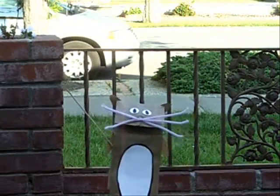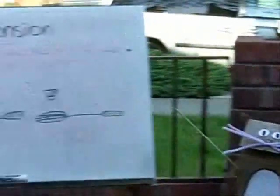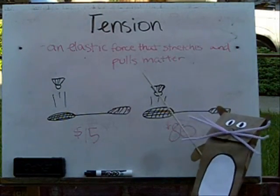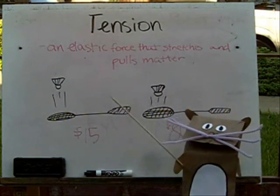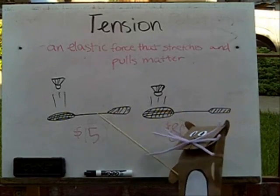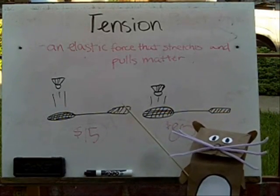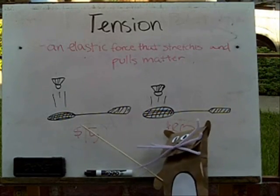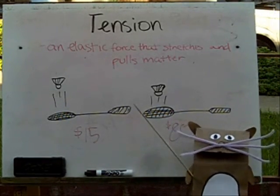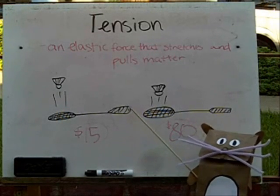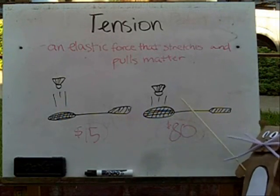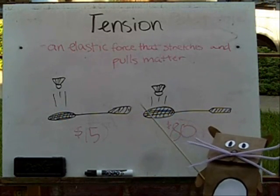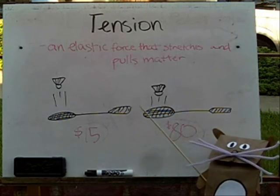The last concept is tension. Tension is an elastic force that stretches and pulls matter. There is a tension force when a badminton racket hits the shuttlecock. The strings of the racket exert an equal and opposite tension force on the shuttlecock. For our experiment, we used a $15 racket and an $80 racket. As a result, the expensive racket had less bounce, which allows the player to control the hit better.